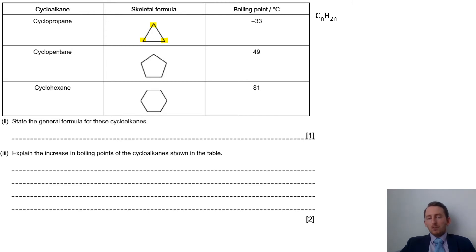Part three: explain the increase in boiling points. Make sure we know what we're talking about - the increase in the table shows -33, 49, and then 81. You don't get a mark saying as you go down the table the boiling points increase because the question told you that, so don't waste your time doing that.